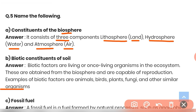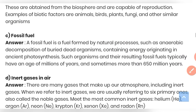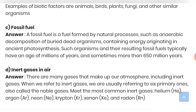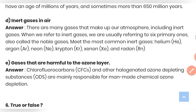Question (c): What are fossil fuels? A fossil fuel is formed by natural processes such as anaerobic decomposition of buried dead organisms, containing energy originating from ancient photosynthesis. Such organisms and their resulting fossil fuels typically have an age of millions of years, and sometimes more than 650 million years.